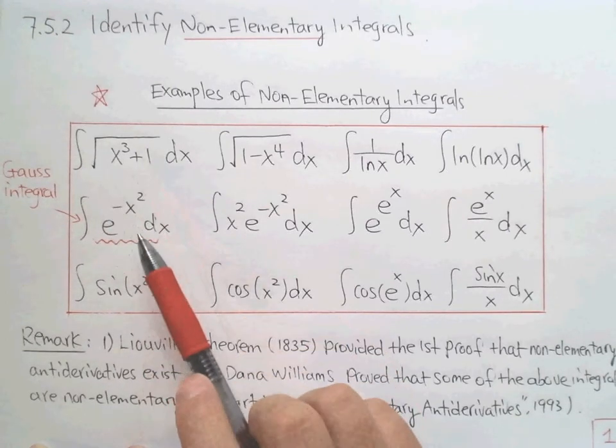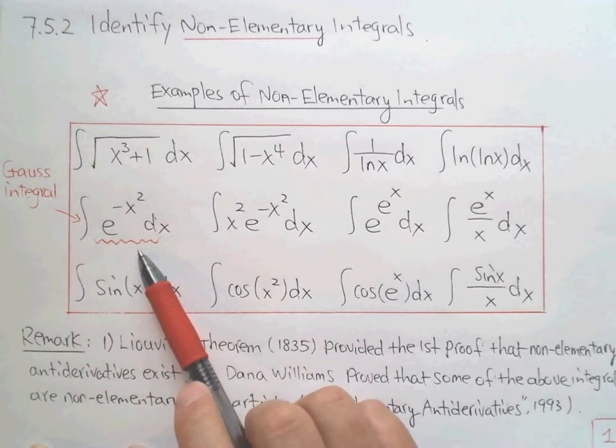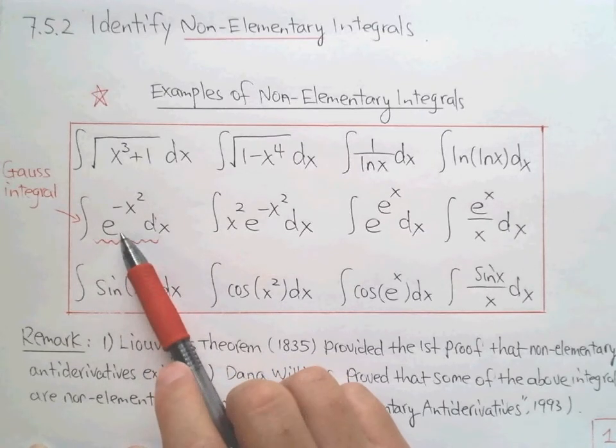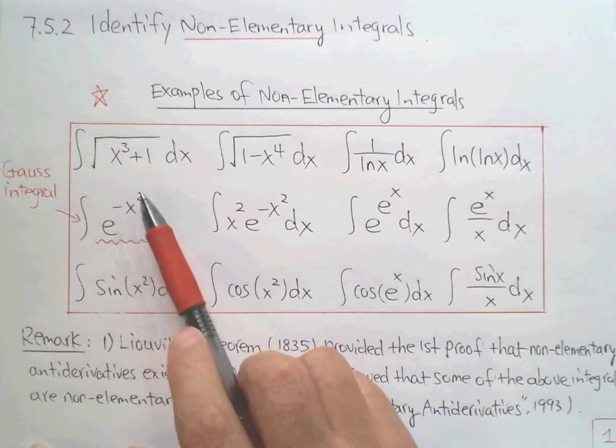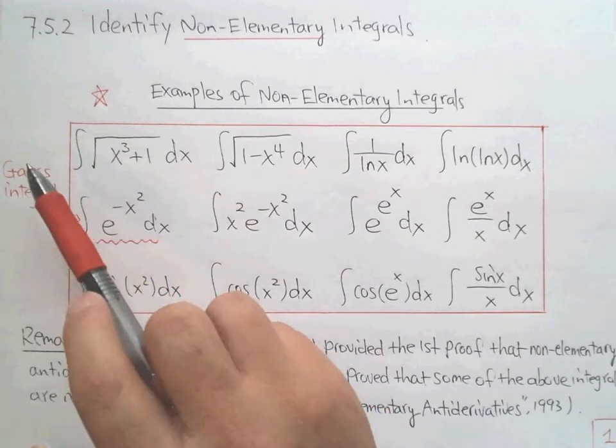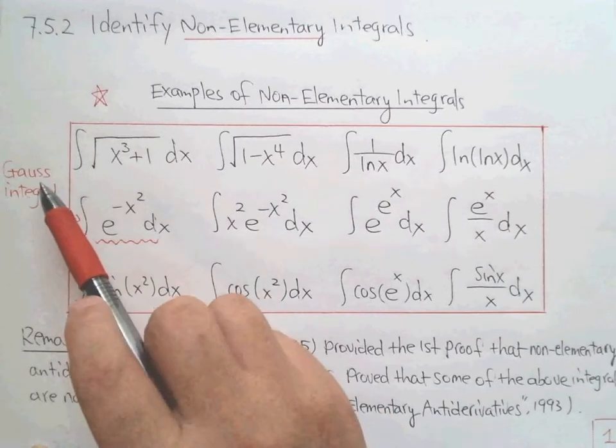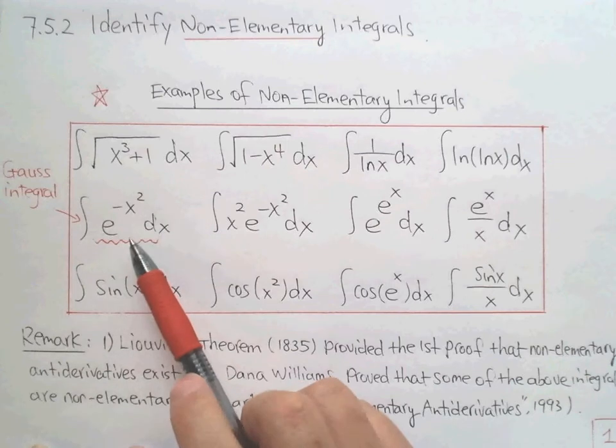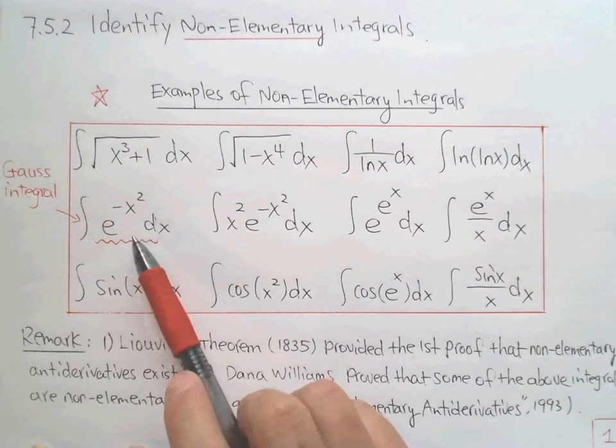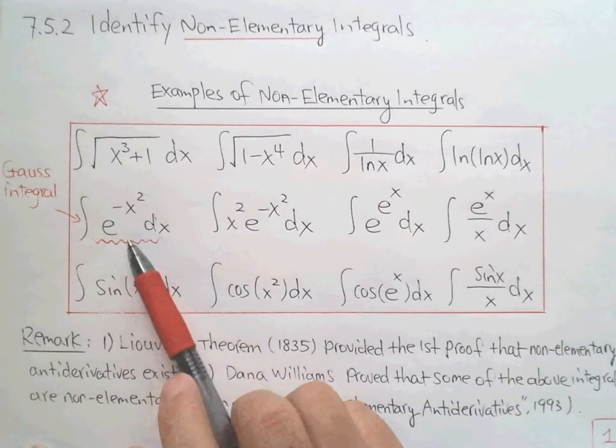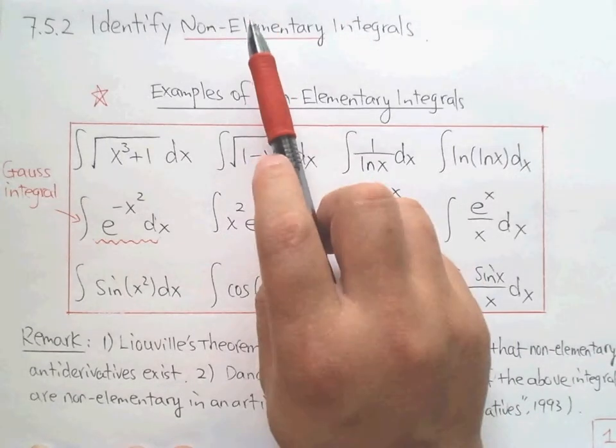For example, I pick another one. Look at this. If the integrand is e, it looks like a kind of exponential. However, the power is negative x square. This is famous in history called the Gauss integral. Gauss is one of the most famous mathematicians. In probability, this integral is very important. However, the anti-derivative of this, we cannot find the elementary function to describe.